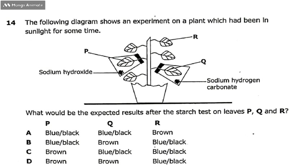So option A says P will turn blue-black. That is not true, so the answer is wrong. Option B also says the leaf P will turn blue-black. Again, P is wrong, which means the entire answer is wrong.